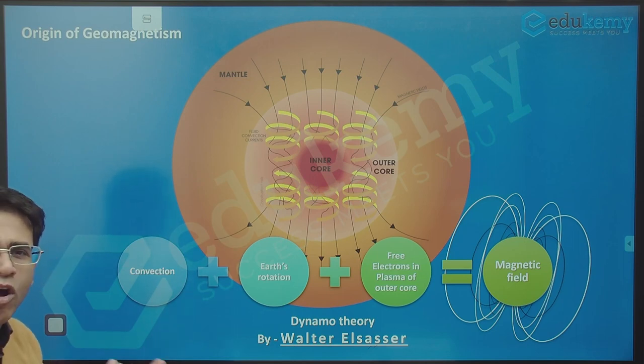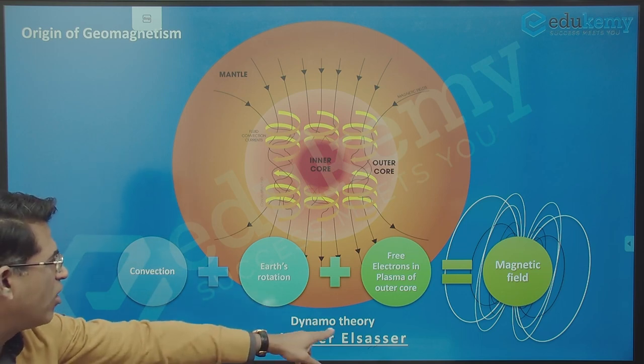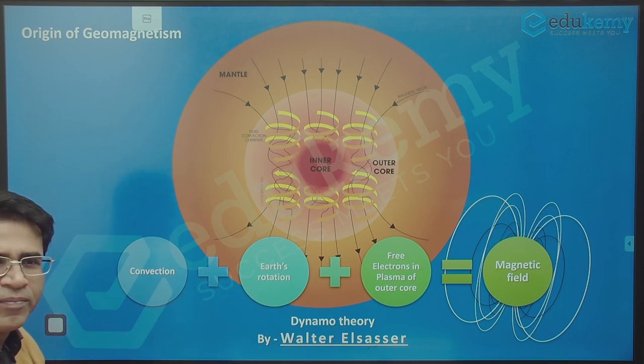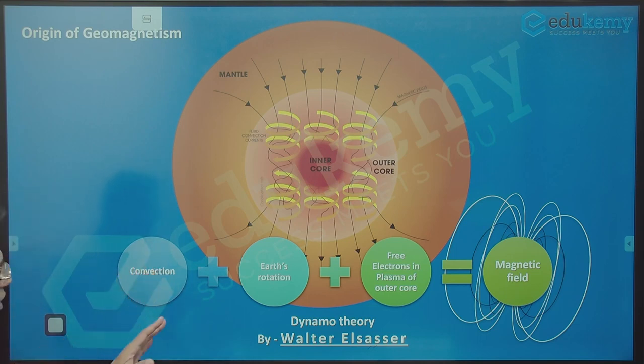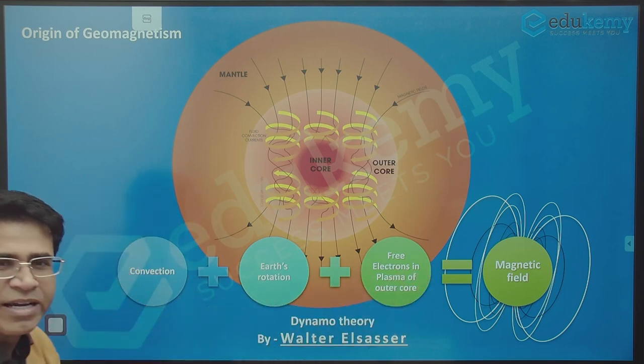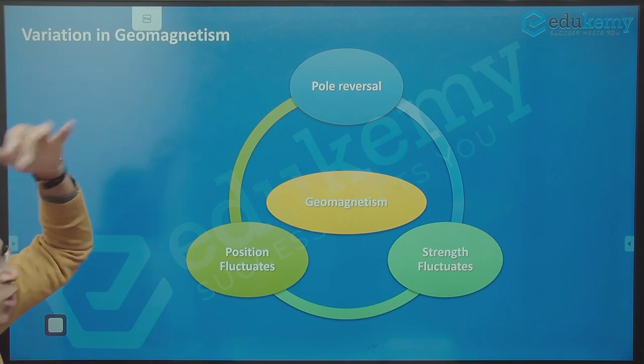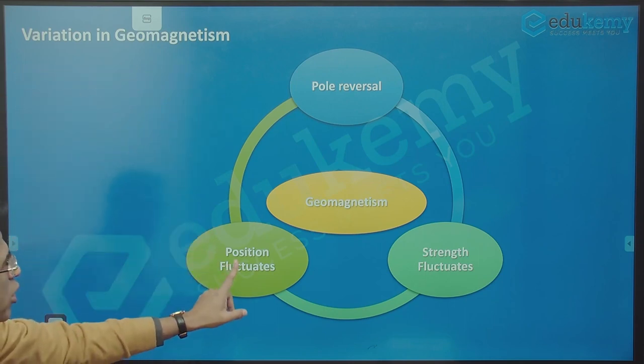Walter Elsasser gave this idea called dynamo theory. Convection currents, earth rotation, the fluid movement, electrons in the plasma give us a magnetic field. Some variations we talked about - the pole positions can slightly fluctuate, the strength can become strong and weak.